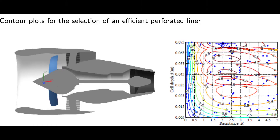Now, let's take a look at a concrete example. The noise attenuation of turbofan intakes in aircraft engines is a serious issue. One typically uses acoustic liners surrounding the intake to attenuate the noise.